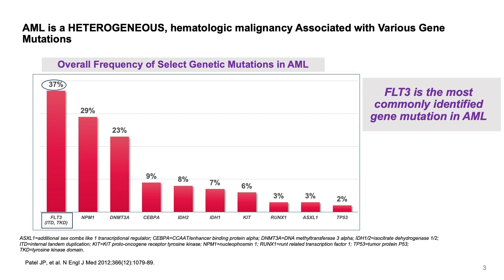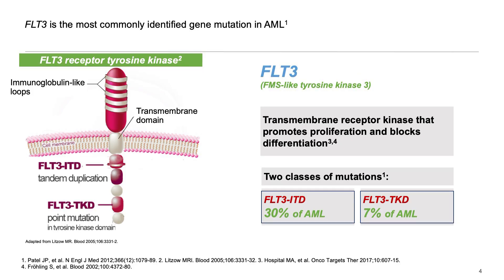AML is a heterogeneous disease and several mutations have been identified. FLT3 mutation is one of the most common, occurring in around 37% of AML cases. FLT3 is a tyrosine kinase receptor with extracellular, intramembrane, and intracellular kinase domains. There are two common mutation types: FLT3 internal tandem duplication (ITD), usually at the juxtamembrane domain, and FLT3 tyrosine kinase domain (TKD) point mutation. FLT3 ITD accounts for almost 30% and is a clear negative prognostic marker. FLT3 TKD is around 7-10% with controversial prognostic significance, but we now have targeted treatment for both.